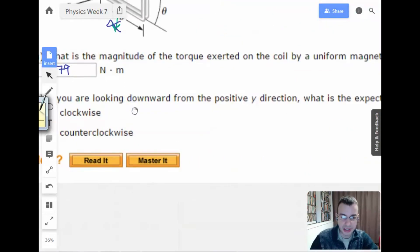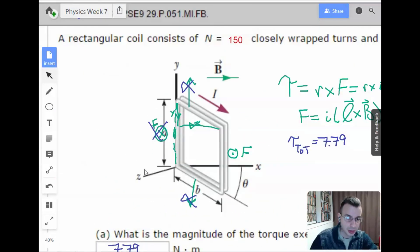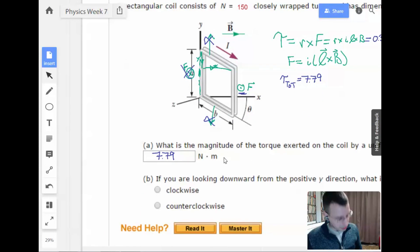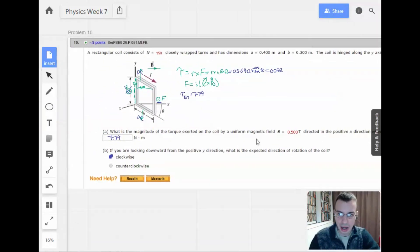If you're looking downward from the positive y direction, what is the expected direction of rotation of the coil? Alright, so the magnetic fields are going to want to align. We have the coil going this direction and the magnetic field going this direction so the coil wants to turn this way. Another way of looking at this is we know this force right here. If I'm looking at it from the top, we're pulling it this direction which is going to be rotating it like this. Is that clockwise? Yeah, I'm going to say that's clockwise. And that is how I would do that problem.